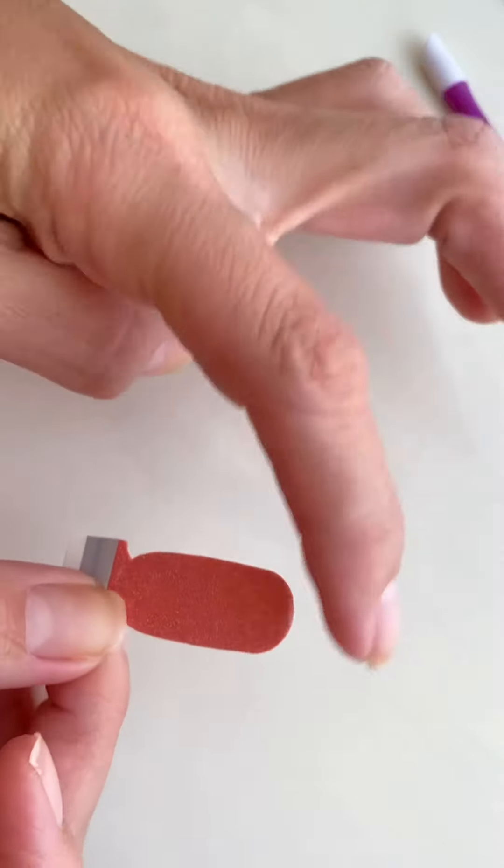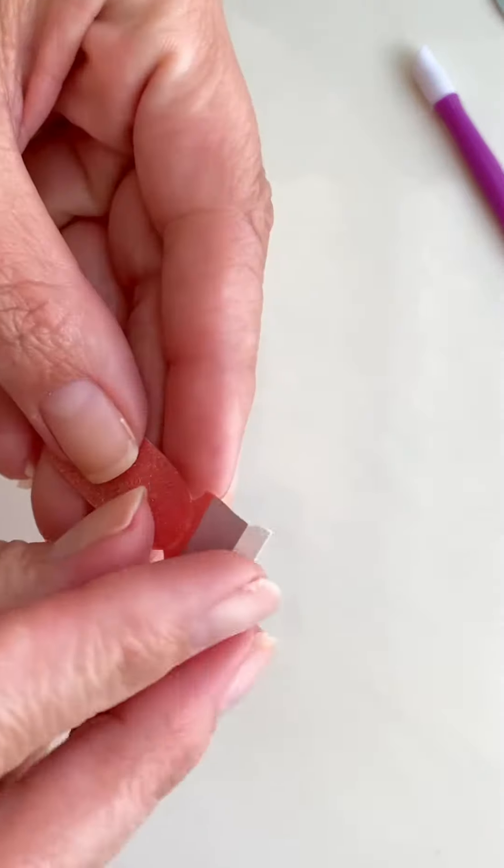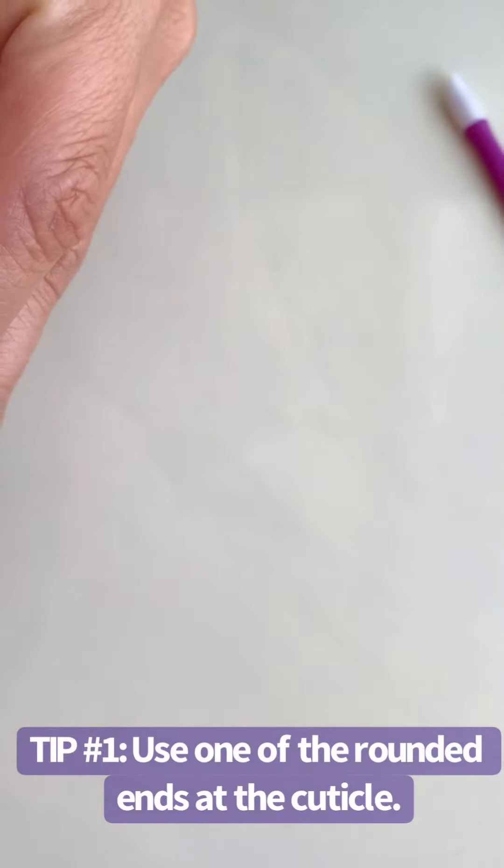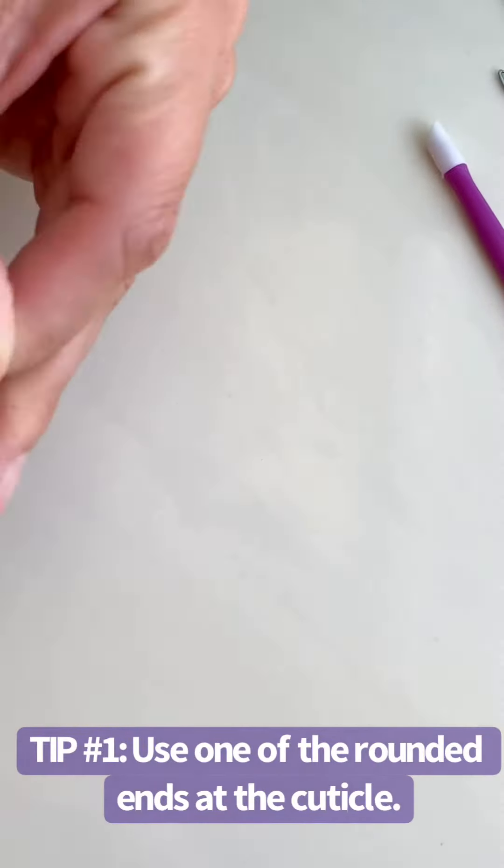Remember that rounded end always lines up at the cuticle line. So that's the first thing that you want to make sure to do when applying your strip.